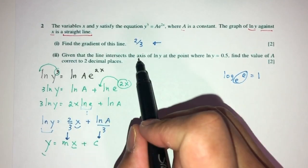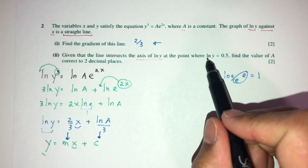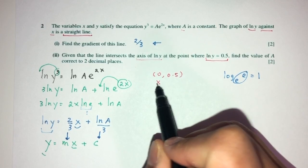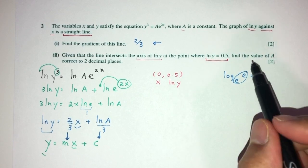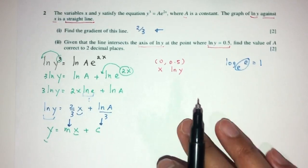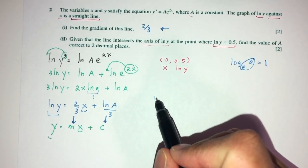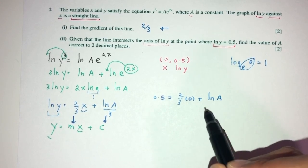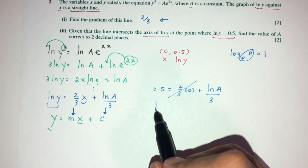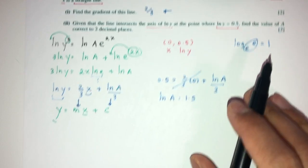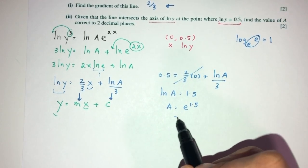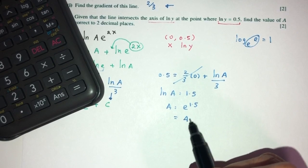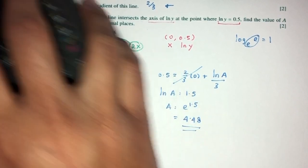For part two, the line intersects the vertical axis of ln y at the point (0, 0.5). Find the value of A correct to two decimal places. Using our derived equation: ln y equals 0.5, and 2/3 times 0 goes away, so ln(A)/3 equals 0.5, meaning ln A equals 1.5. Therefore A equals e to the 1.5, which is 4.48 correct to two decimal places. That is your answer for question number 2.